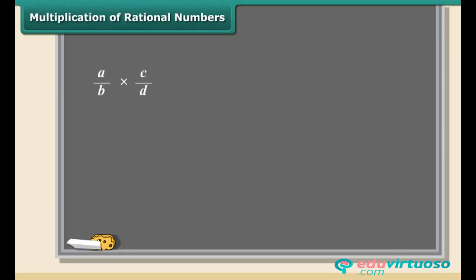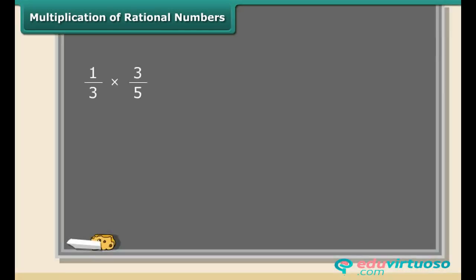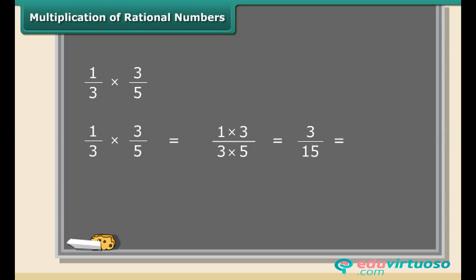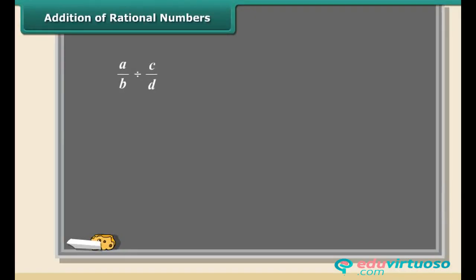Now we will study multiplication of rational numbers — this is the easiest one. To multiply two rational numbers, just multiply the numerators and denominators separately. Here is an example: we will multiply one by three and three by five. First multiply the numerators, then multiply the denominators. This fraction can be further simplified to one by five.